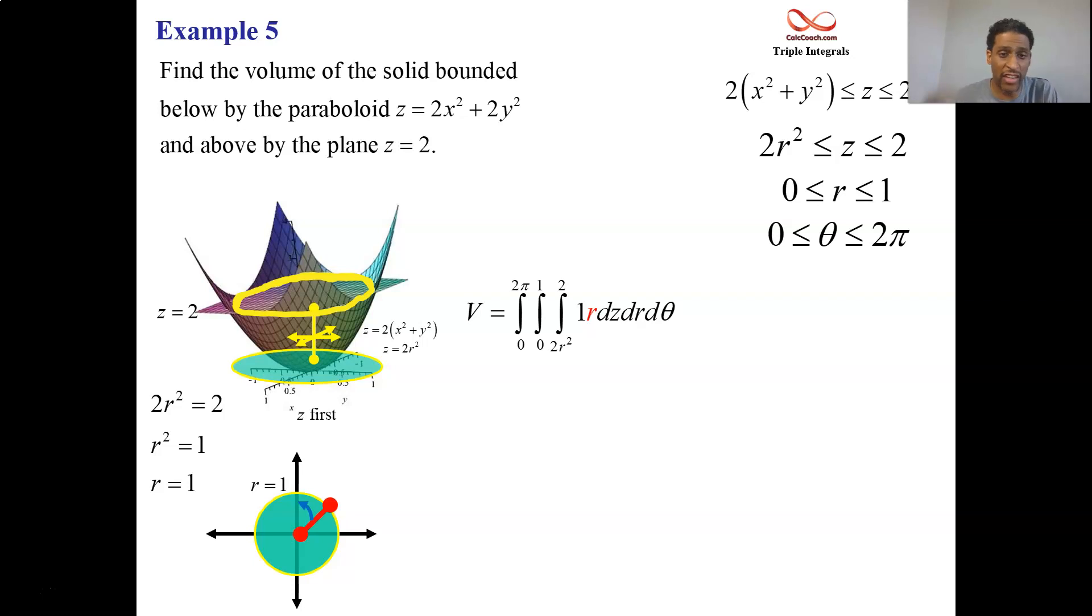You're integrating with respect to z. There is no z there, so you just get z. You put a two in, you put a 2 - r², I mean 2 - 2r². And you get what's there. And now we're going to multiply the r in to get 2r - 2r³.